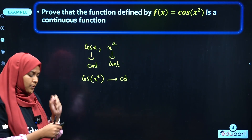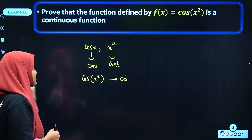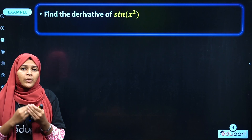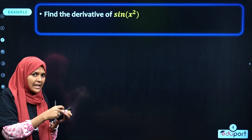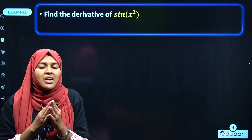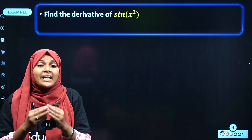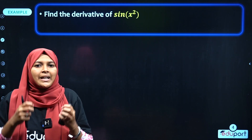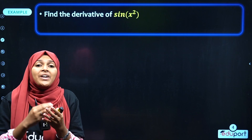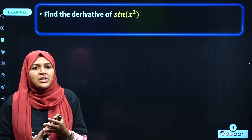The next question is: find the derivative of sin(x²). Here again, sin(x²) is the composition of sin(x) and x². The two functions are mixed, so we apply the chain rule.